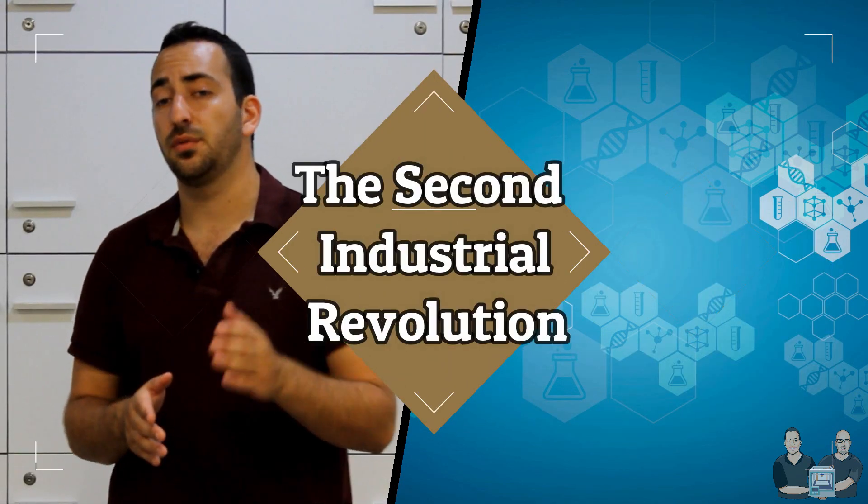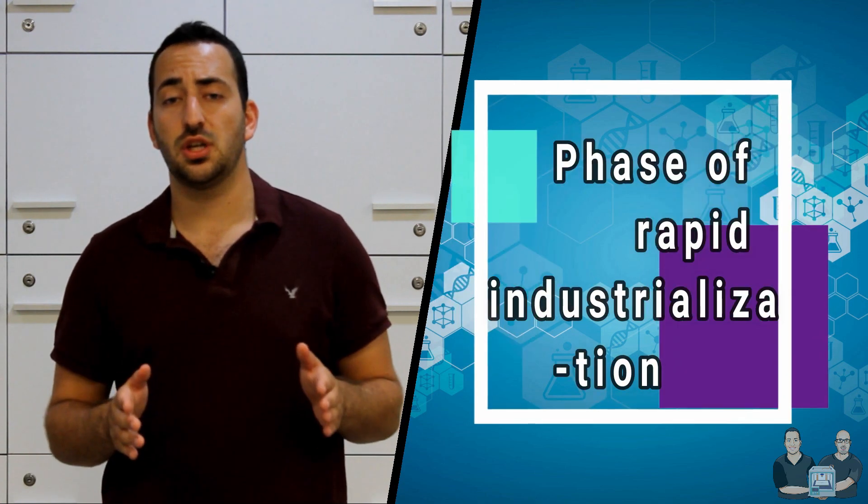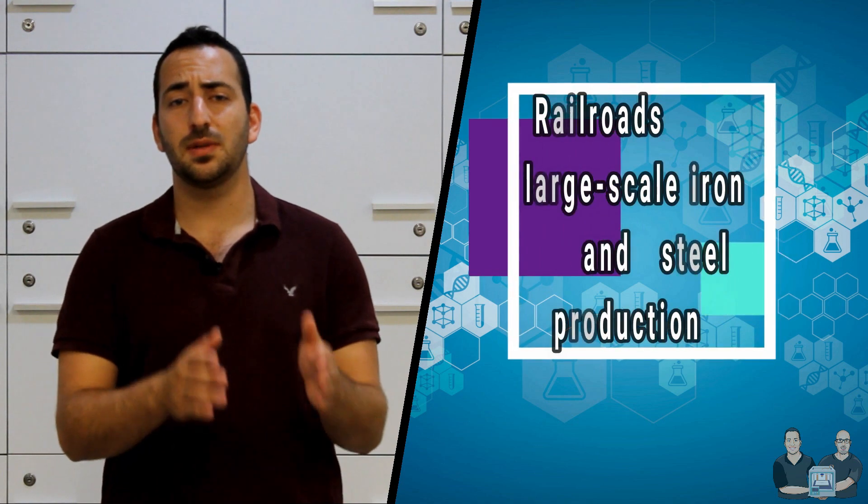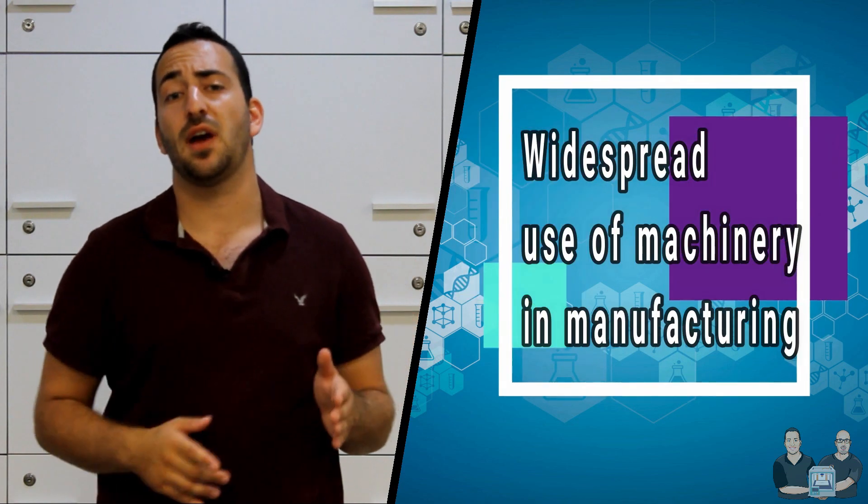The second industrial revolution, also known as the technological revolution, was a phase of rapid industrialization that took place during the first third of the 19th century and the beginning of the 20th century. It was characterized by the build of the railroads, large-scale iron and steel production, and widespread machinery in manufacturing.